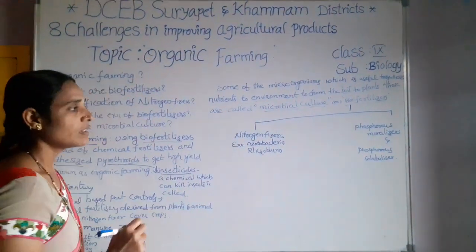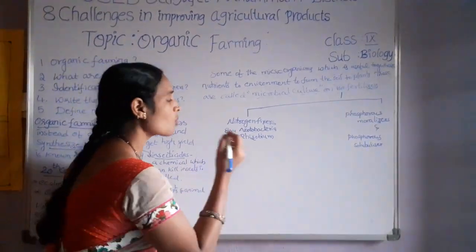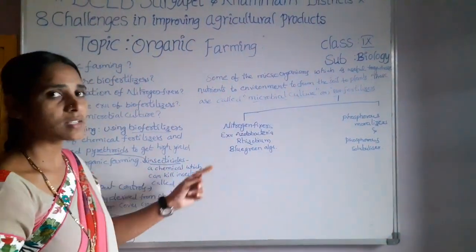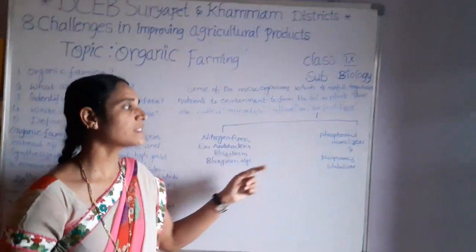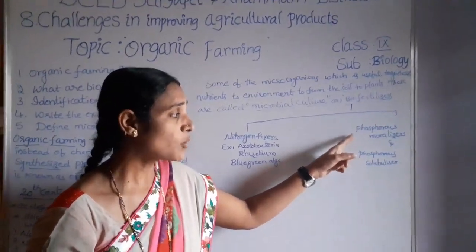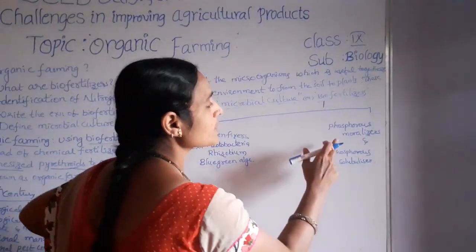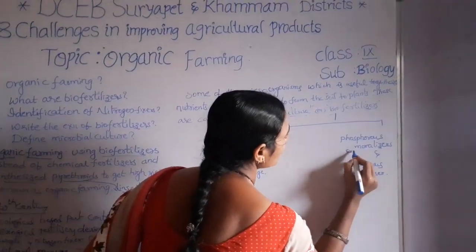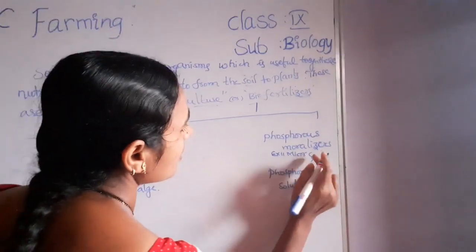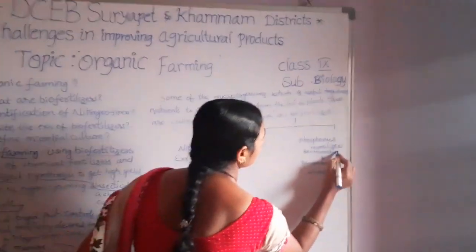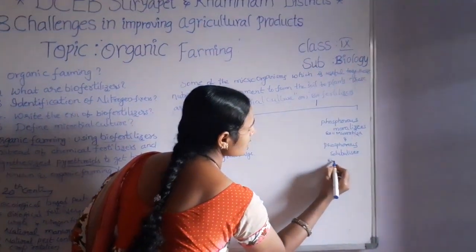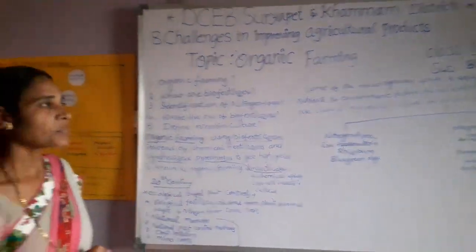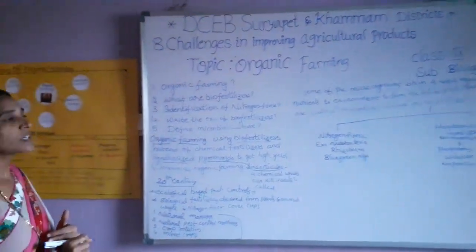Another nitrogen fixer is blue-green algae. For phosphorus mobilizers, the example is Mycorrhizae. For phosphorus solubilizers, the example is Penicillium. These are the examples of bio-fertilizers.